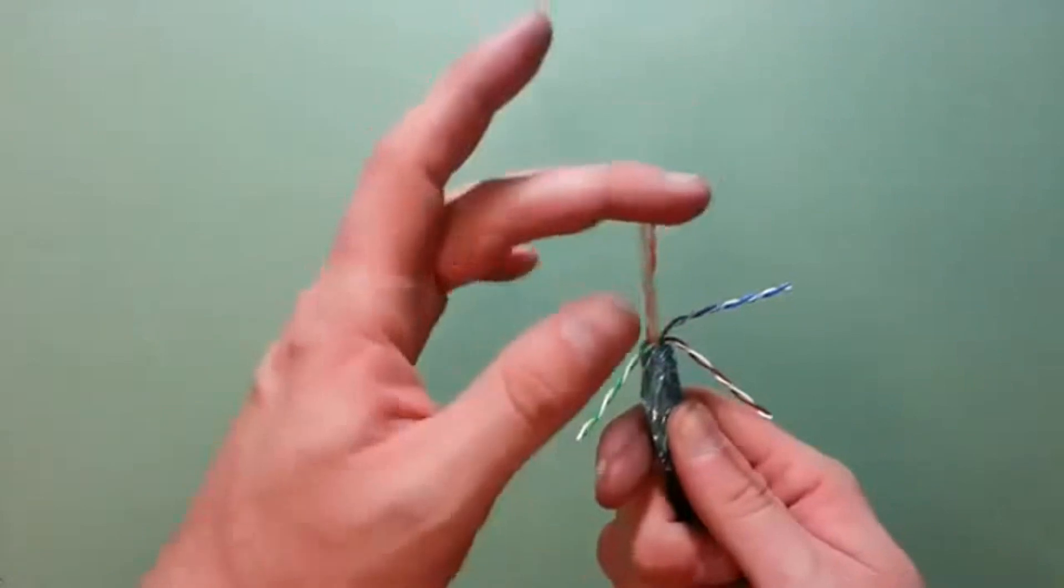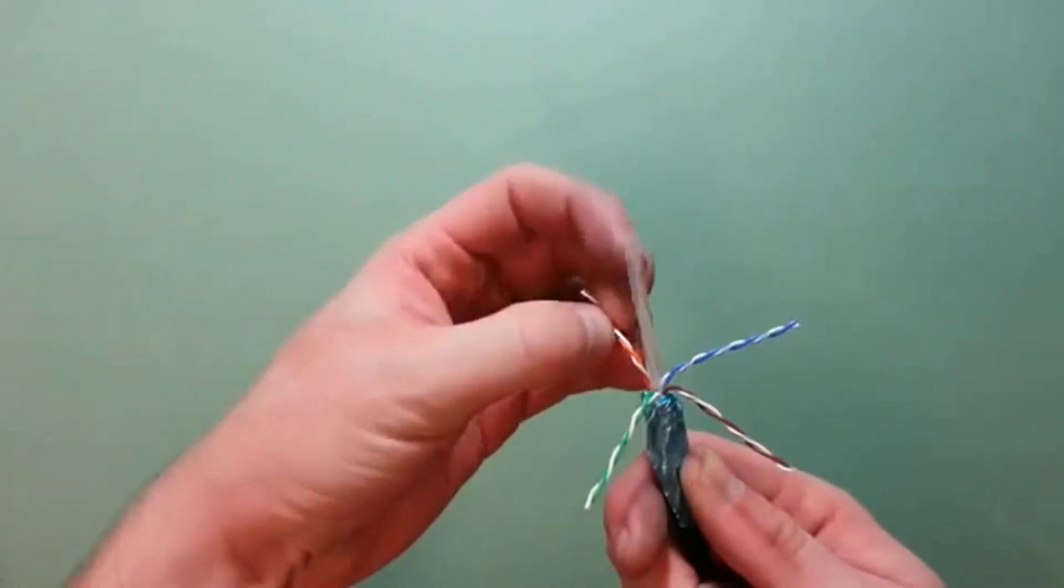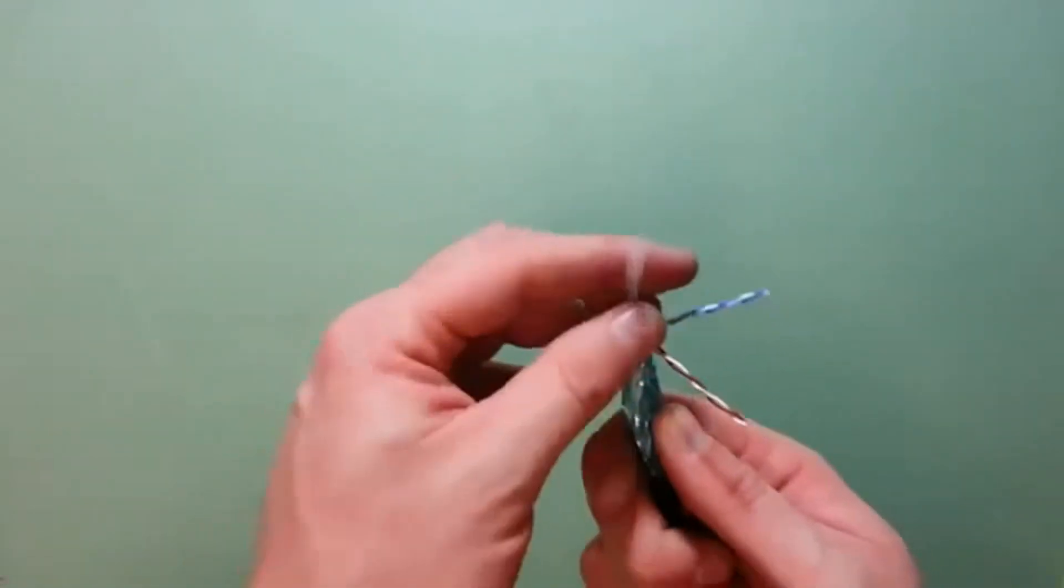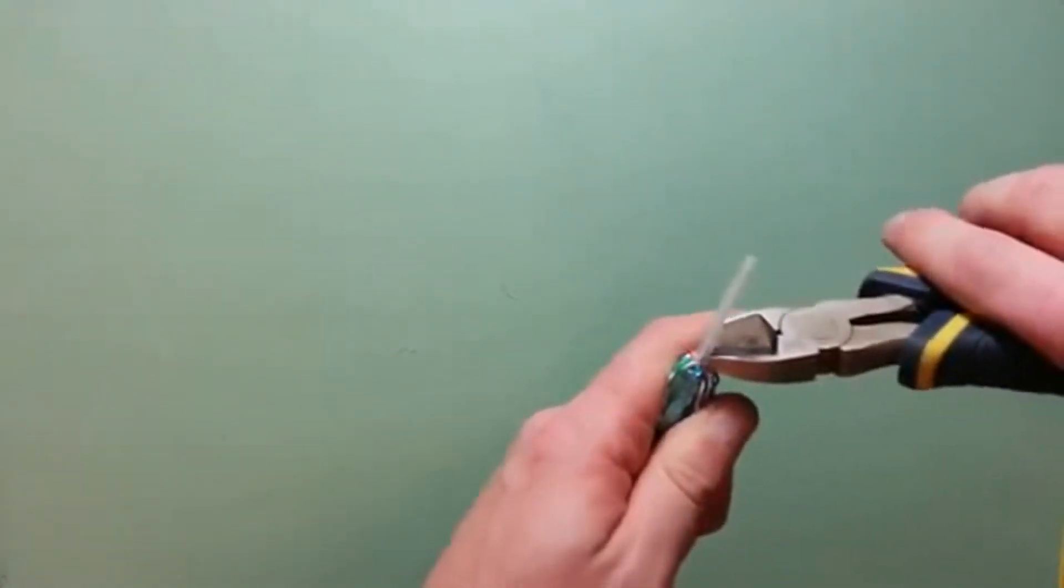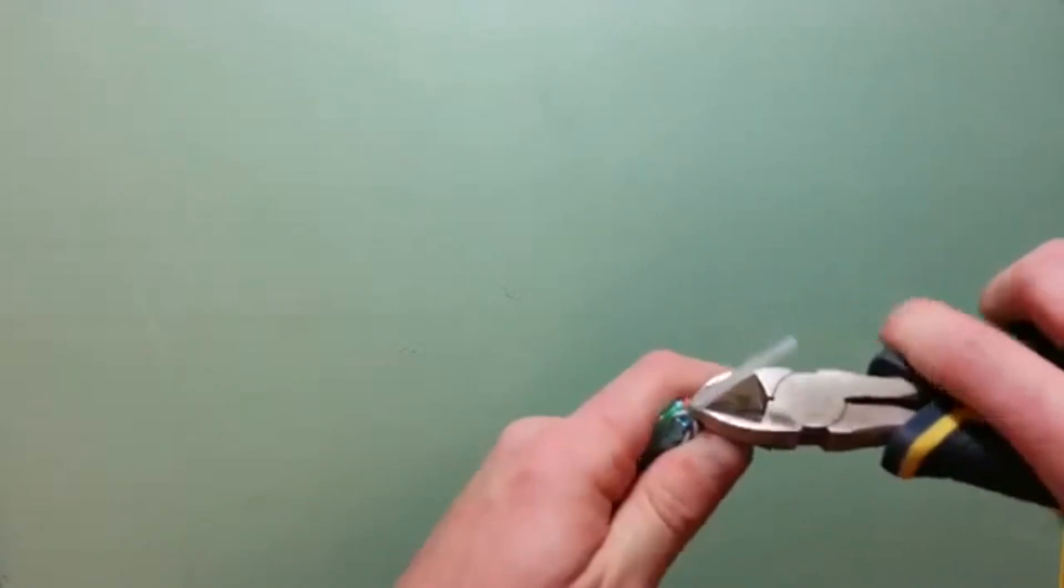Fold the wire pairs back to expose the anti-crosstalk divider. Using wire cutters, cut away the exposed portion of the anti-crosstalk divider.